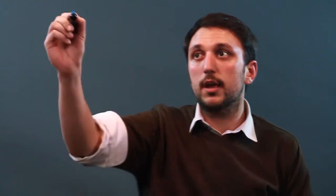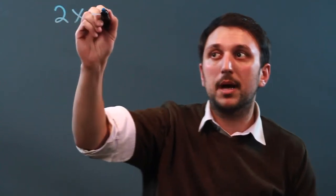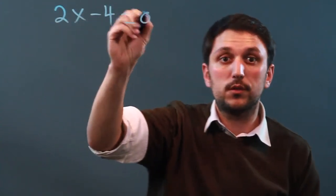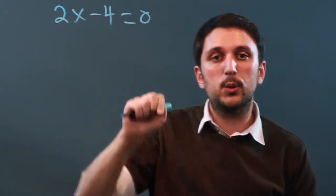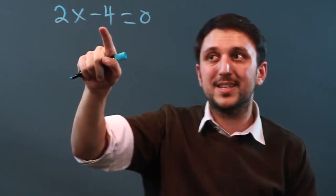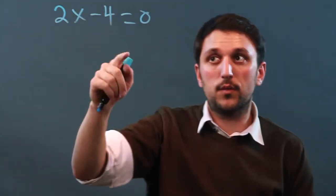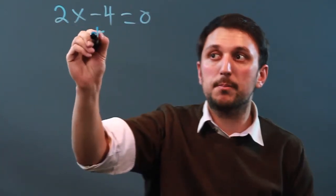So first, what does opposite mean? Well, it can mean two things. If we have 2x minus 4 equals 0, and we want to find the value of x, well, we have to add the opposite of negative 4 over to here. So that would be positive 4.